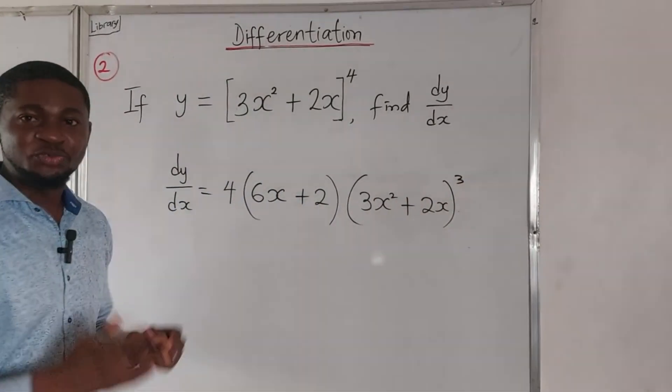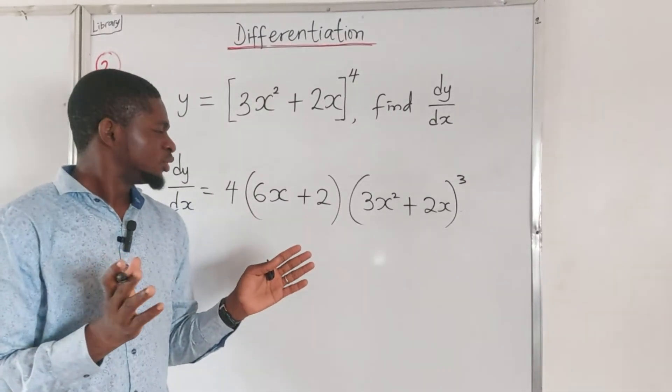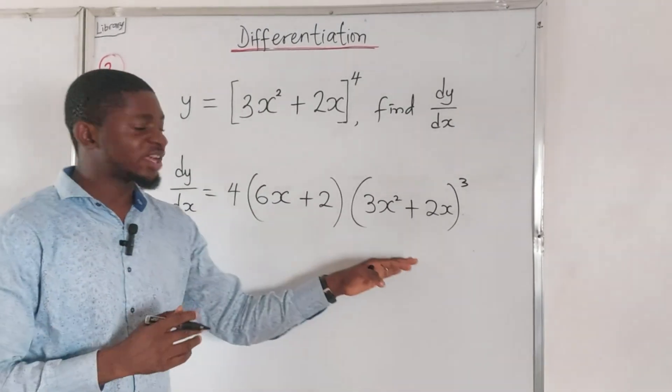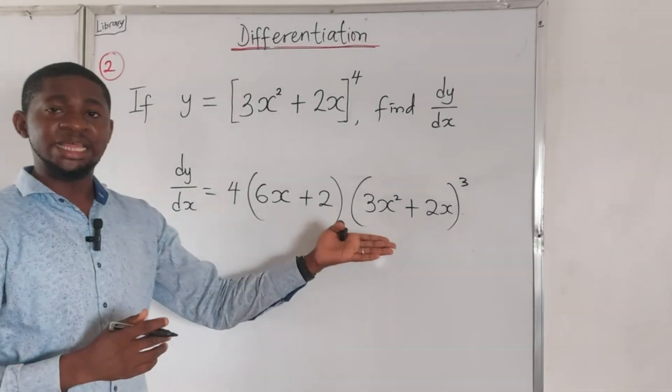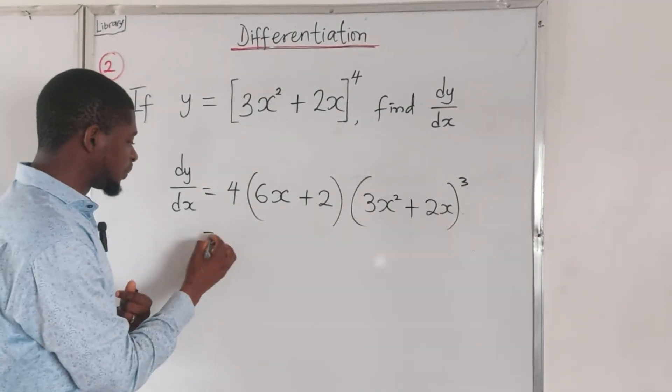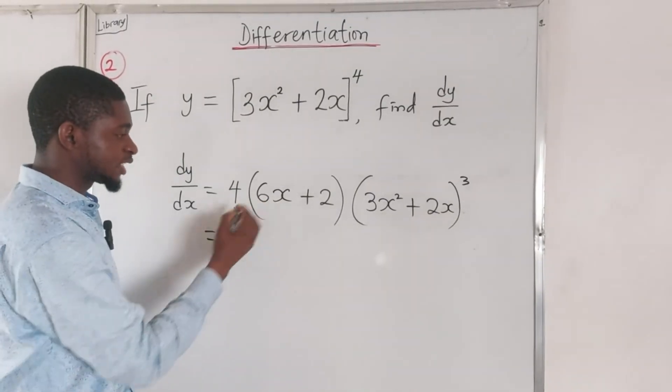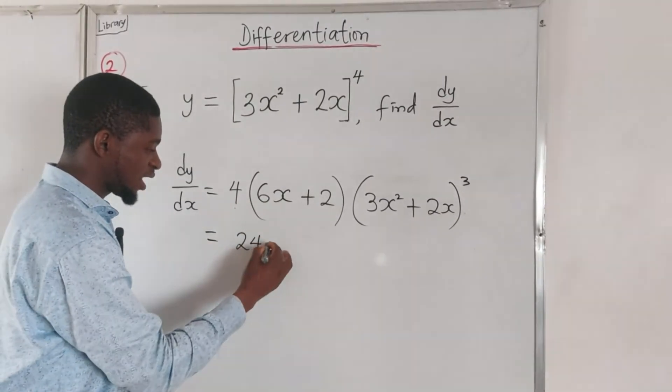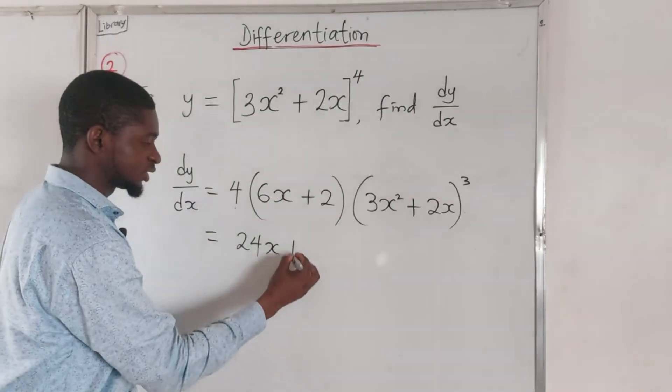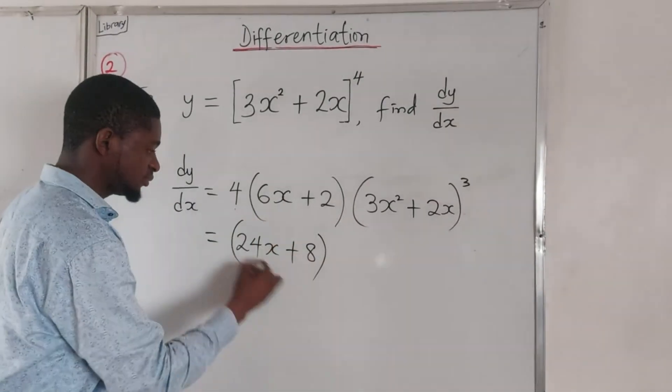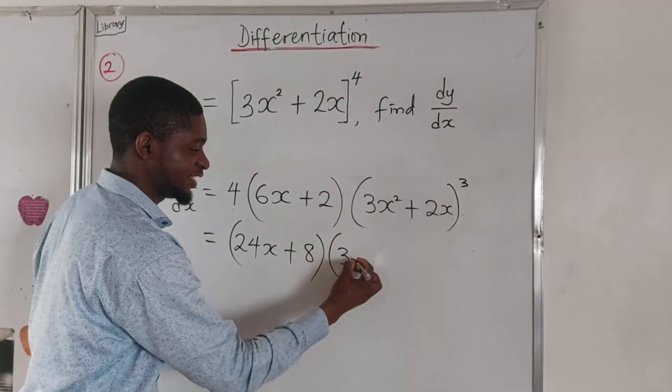And doing this, you've been able to simplify this in JAMB. So let's now look at the options available. We are not seeing it like this. What next you can do is to simplify further by saying maybe you multiply this: 4 times 6, that's 24x + 8. You do this: (3x² + 2x), close this ³.